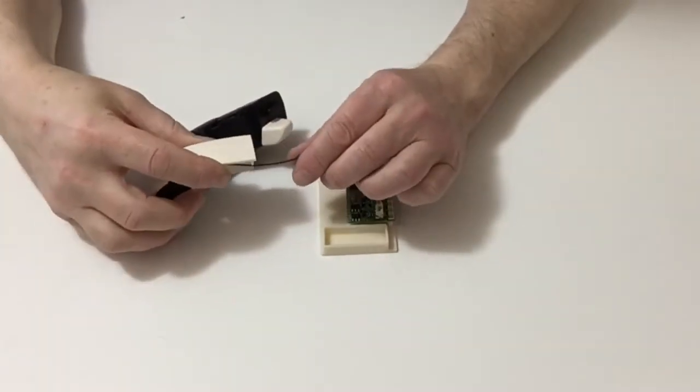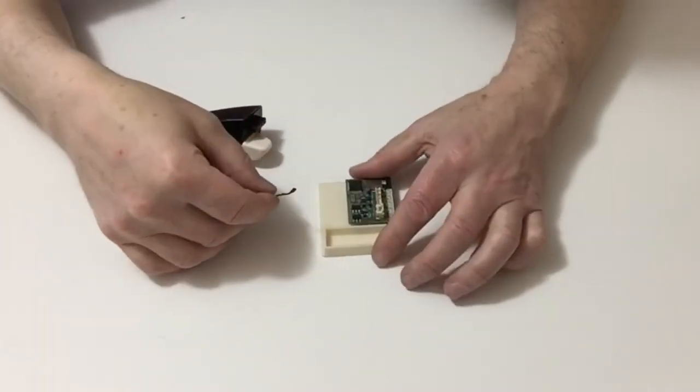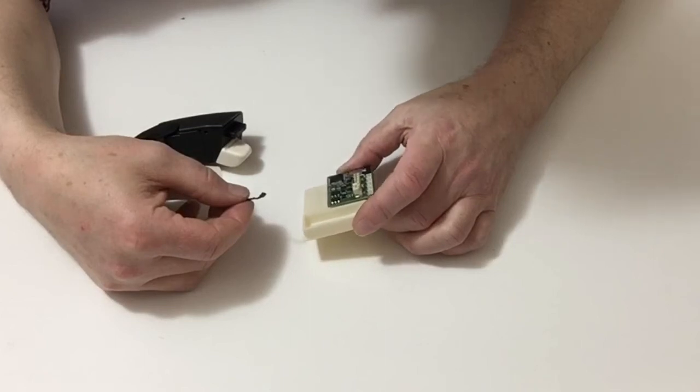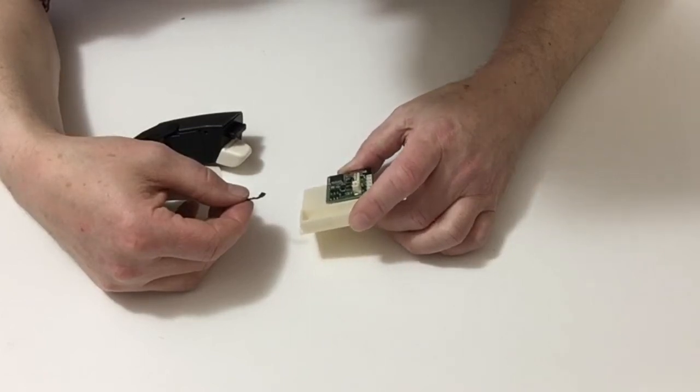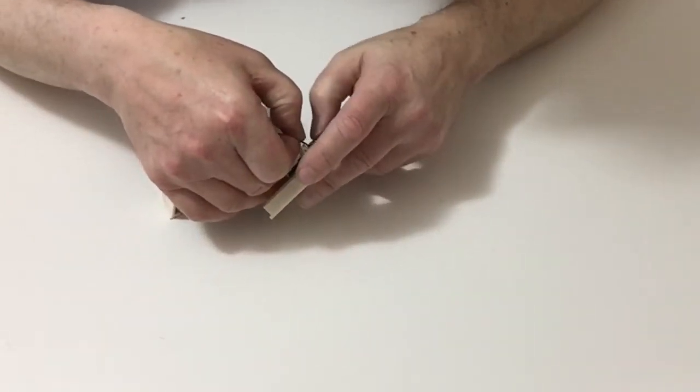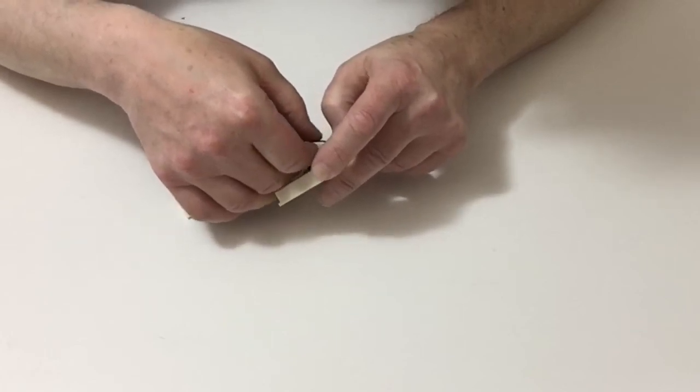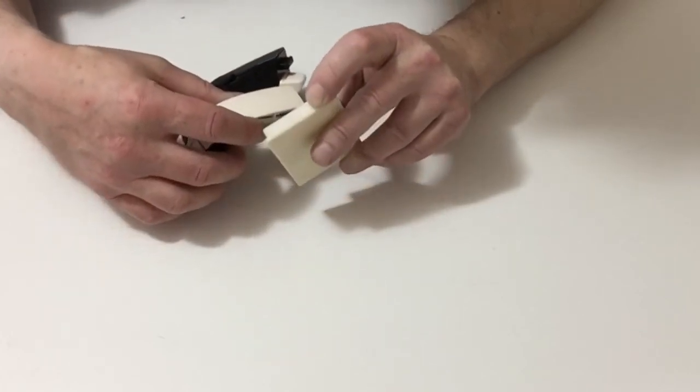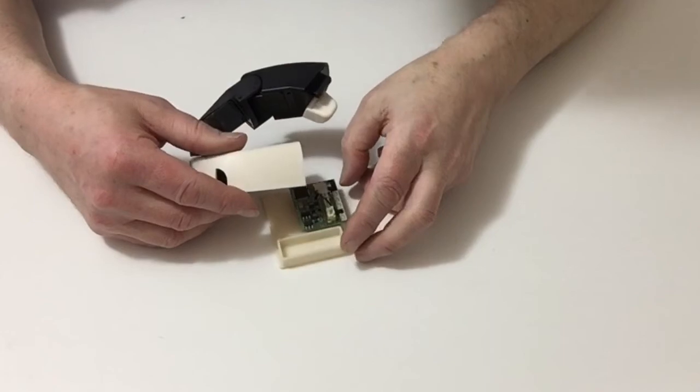Once you've done that take Robbie's left shoulder assembly and we're going to be placing that into the connector that says CN5A. Making sure that's the right way, carefully pressing that down.